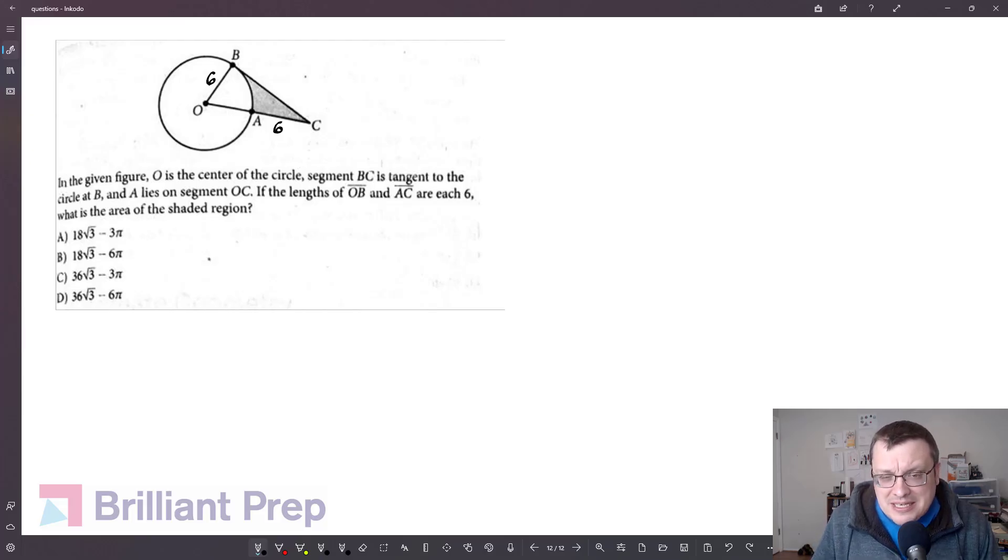First, they told us that BC is tangent to the circle at B. We also know that OB is a radius, and a good rule of thumb, a good fact to remember, is when you draw a radius to a point of tangency like this, it creates a right angle. So this is in fact a right triangle. That's good, but I still can't find the area, because I may have the base, but I don't have the height.